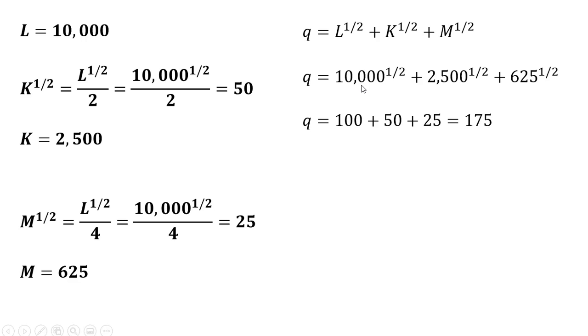If we plug everything back into our production function, we can verify that yes, we produce 175 units with that input mix of L = 10,000, K = 2,500, and M = 625.